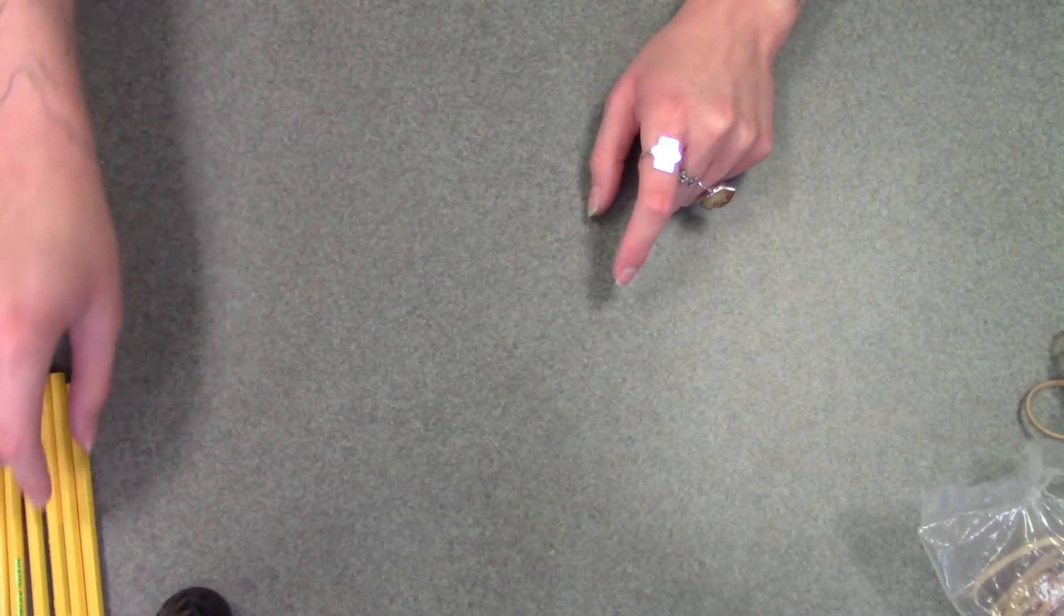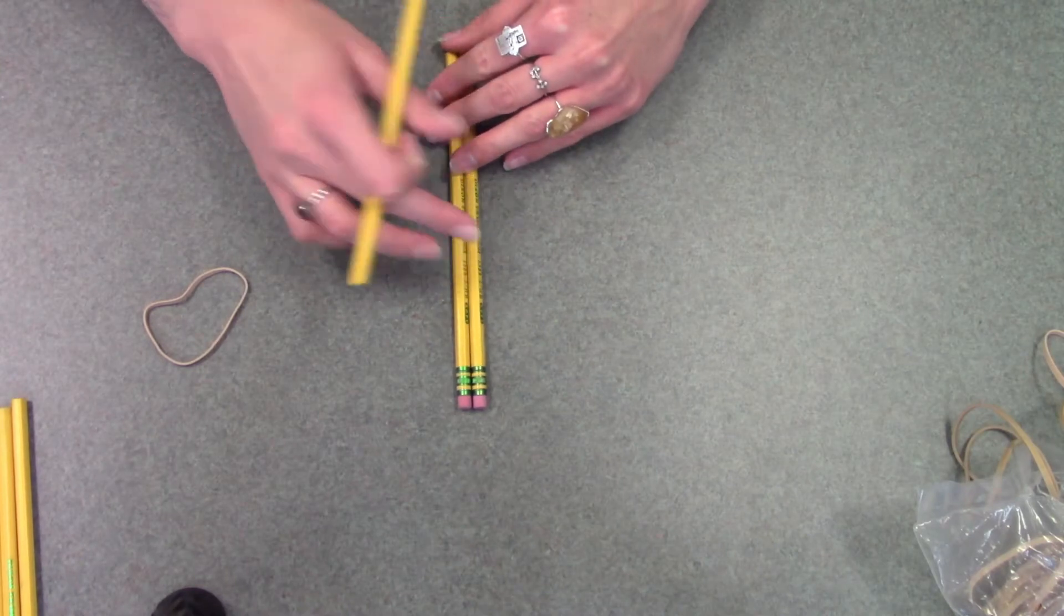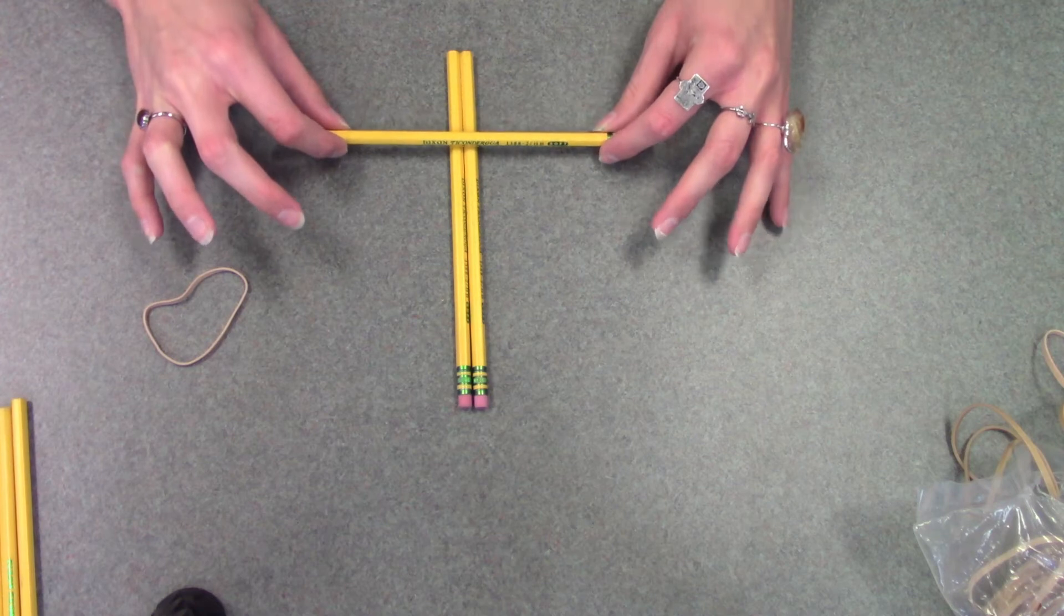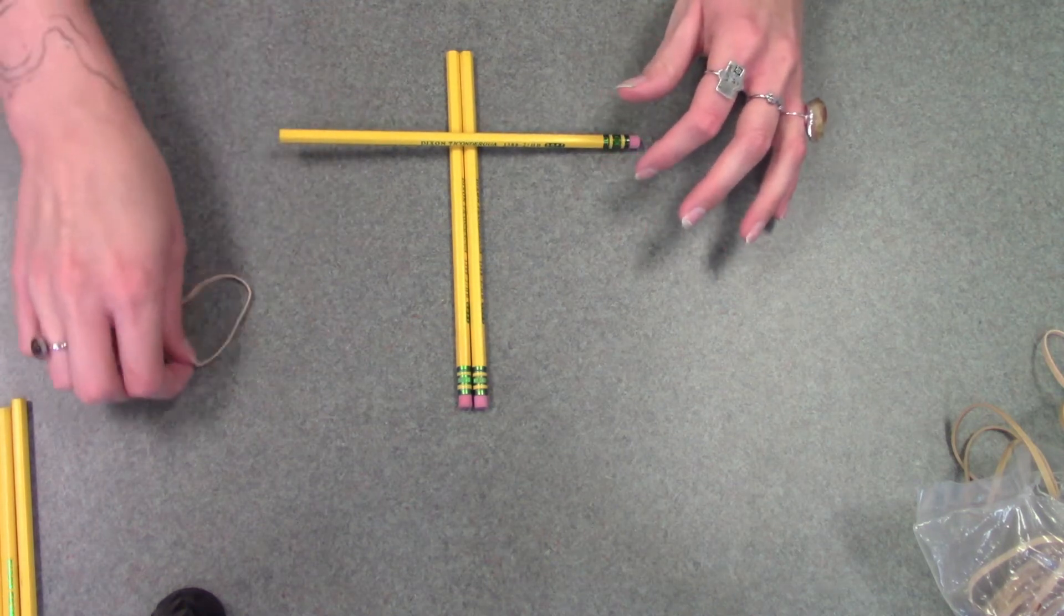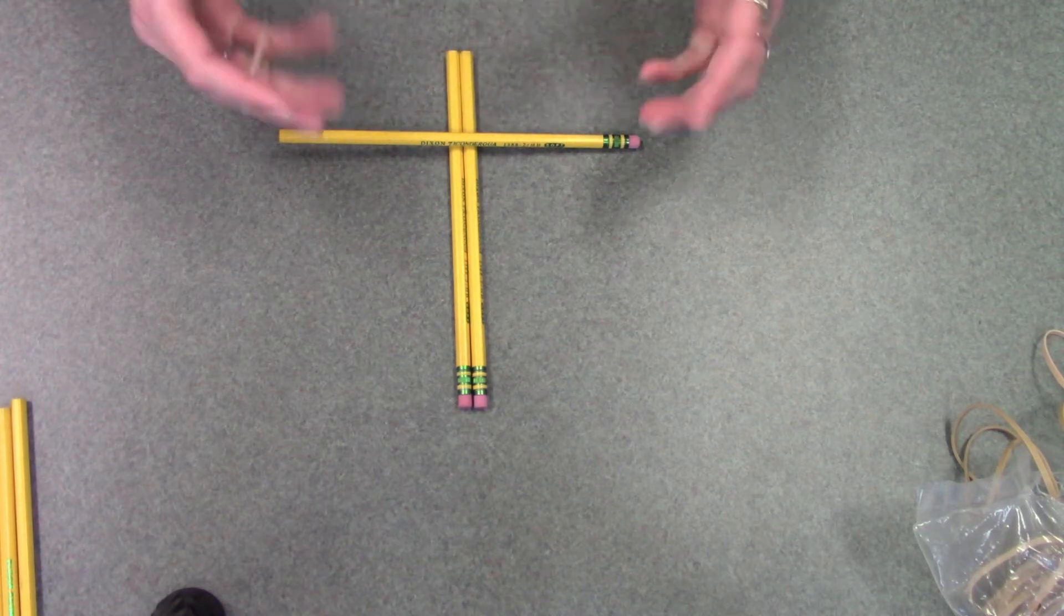The first thing you're going to do is take three pencils and one rubber band. You're going to keep two of them aligned together while you take the third one and place it about two-thirds of the way down the pencils. Then take the rubber band and wrap it around all of them, connecting them together.